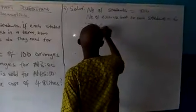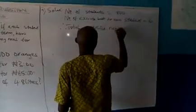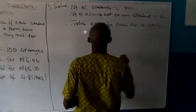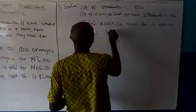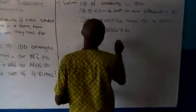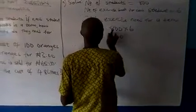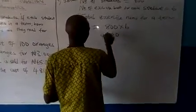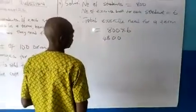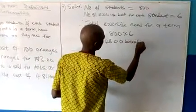Therefore, the total number of exercise books needed for a term will give us 800 times 6. 6 times 0 is 0. 6 times 0 is 0. 6 times 8 is 48. That will give us 4800 books.